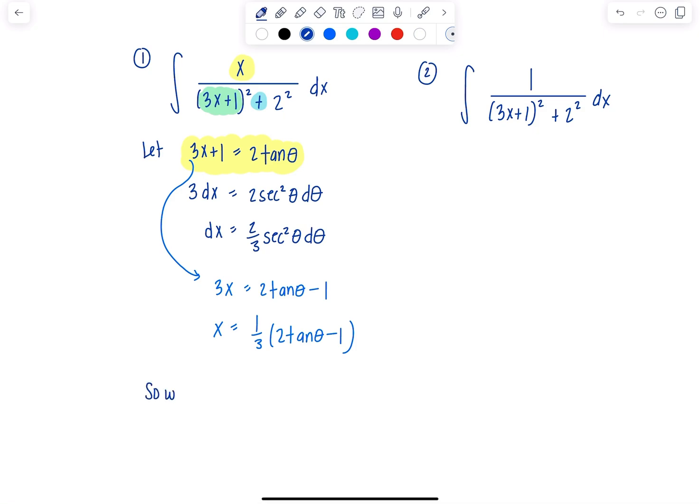So we have this integral. In the numerator is 1 third times 2 tan theta minus 1 over, now instead of 3x plus 1 squared, that's 2 tan theta squared, plus 2 squared. And then dx is 2 thirds secant squared theta d theta.